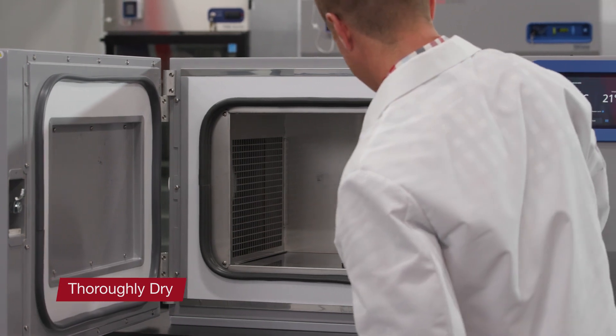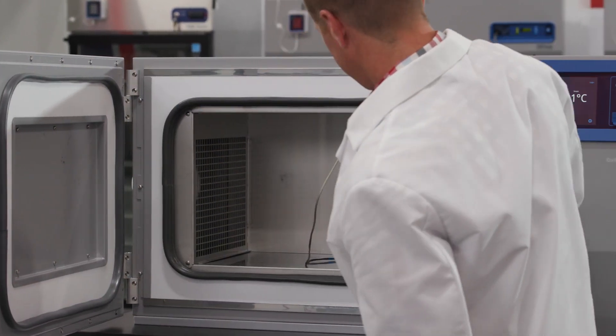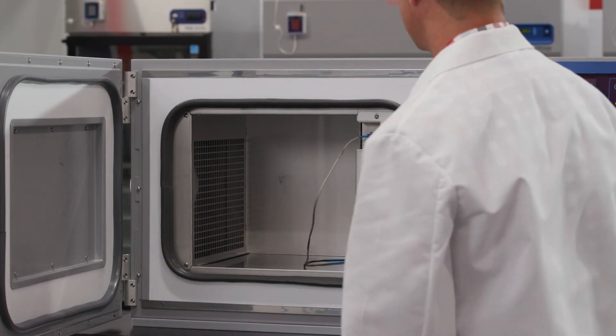Thoroughly dry the door and chamber opening gaskets and heat breaks after each run using a soft cloth to prevent ice buildup, which could reduce the effectiveness of the door seal. Immediately clean up any water that may drip onto the floor in order to prevent potential slipping hazards.